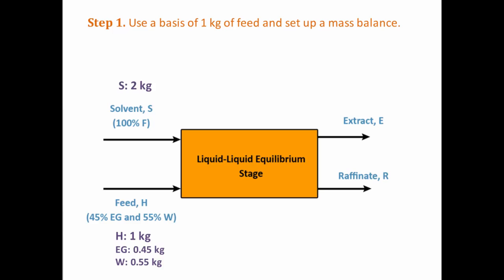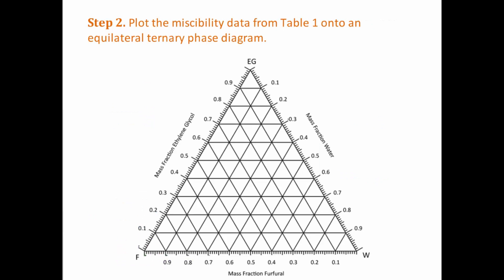These are the extract and raffinate phases. We need to find their composition. Start solving the problem by plotting the data from the table into graphical form. Refer to table 1 and plot each row as one point.